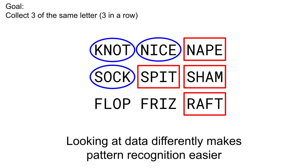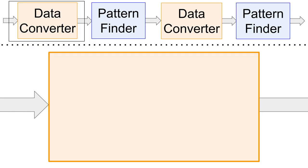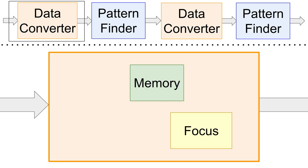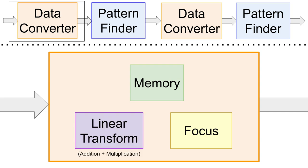This is the key to what makes transformers work so well. Let's look inside the orange data converter box. Like convolutional and recurrent neural networks, transformers have both a mechanism for focusing on important parts, as well as a mechanism for remembering other inputs. There is also a component that can do a linear transform on the data — linear here means multiplying and adding numbers to the data. We will implement three different types of data conversion, starting with just the linear transform part, and eventually adding the other components.